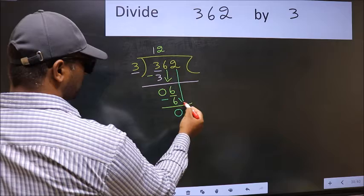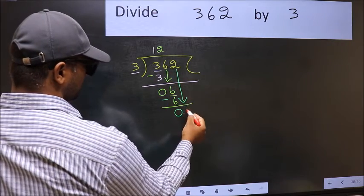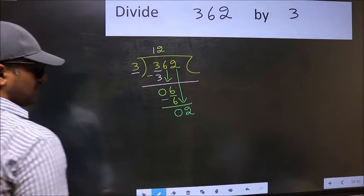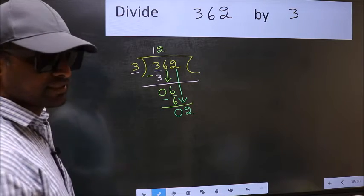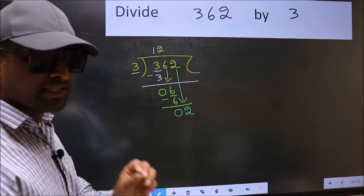After this, bring down the beside number. So, 2 down. After this step, the mistake happens, and the mistake is this.